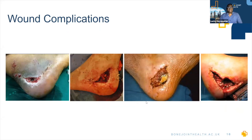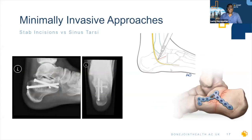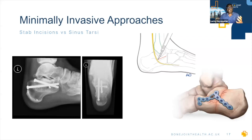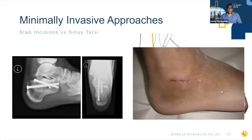We now know you can get the same outcomes with minimally invasive techniques. With the percutaneous technique, small stab incisions are used to lift up the necessary bone fragments: a small incision to lift the posterior facet and restore the subtalar joint, and a Schanz or Steinmann pin into the heel used as a joystick to pull it out and correct the varus — then fixed with screws through stab incisions, avoiding wound complications. You can also use a sinus tarsi approach: a small incision over the sinus tarsi at Gissane's angle, slip a small plate in, restore the subtalar joint, get fixation to the tuberosity — all through a small incision that heals rather well.